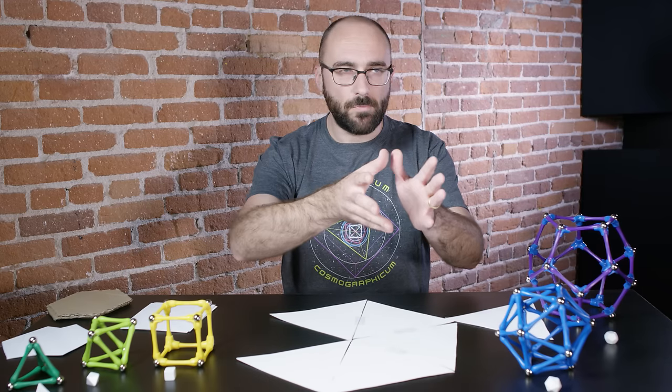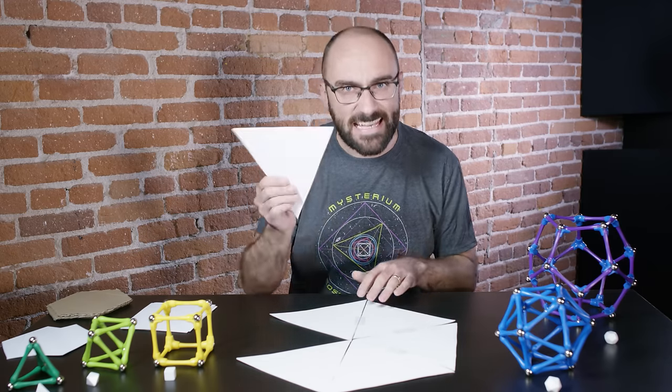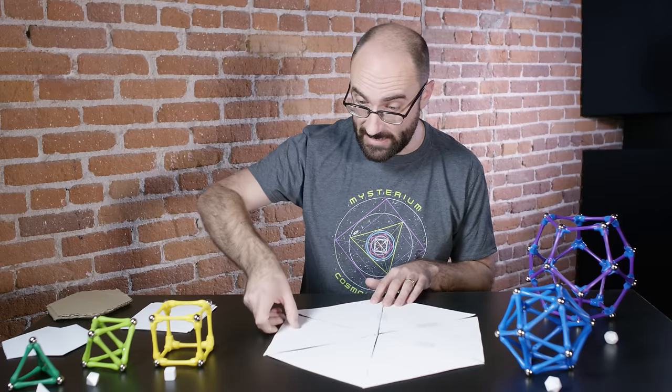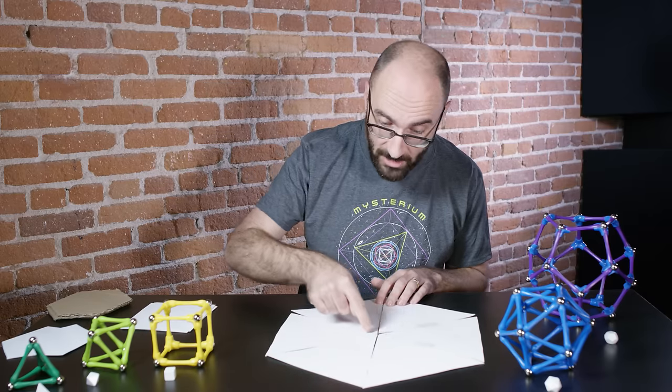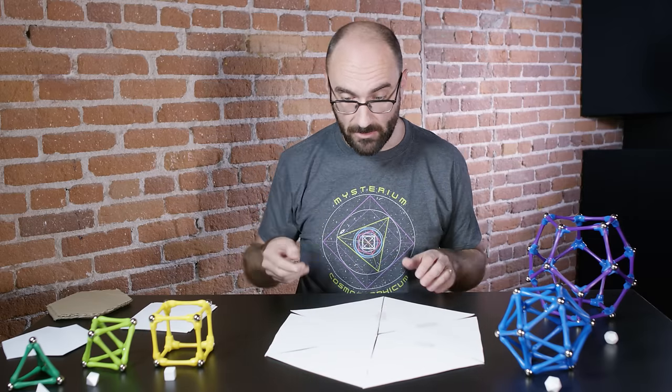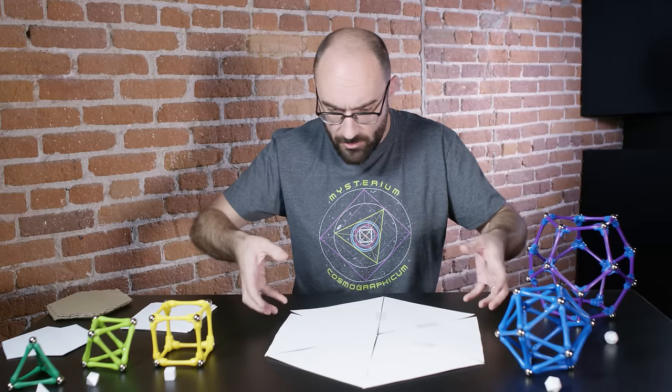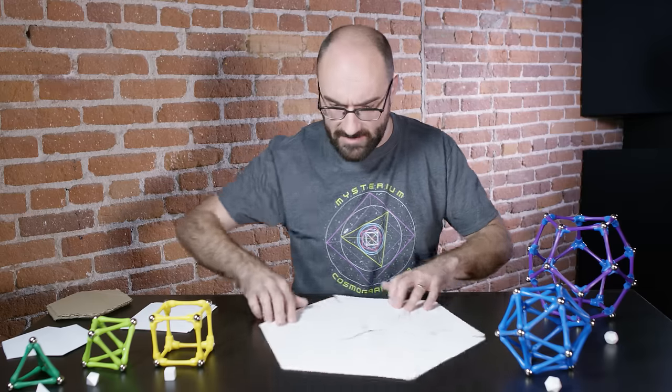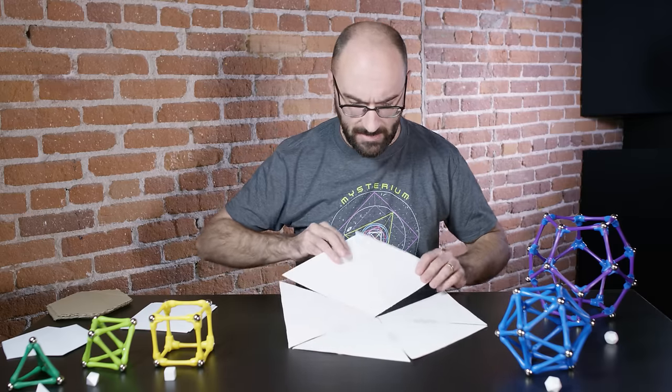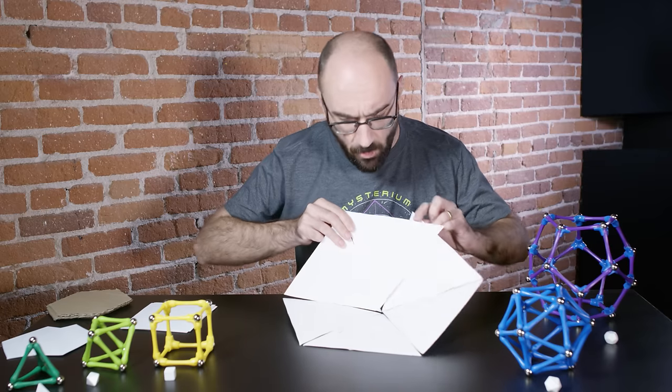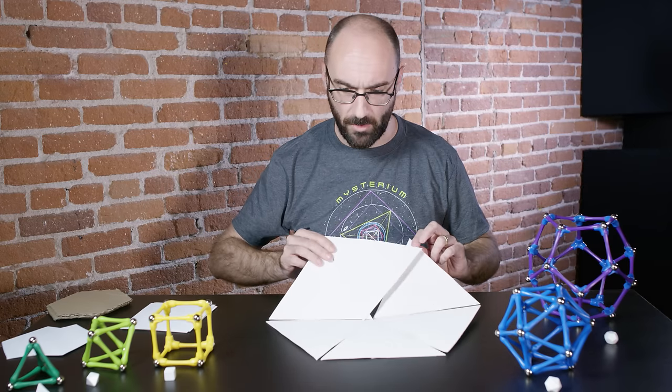We can't go any further. If I take a sixth equilateral triangle and put it in, I now have a full 360 degrees occupied here in the middle. There are no gaps left for this shape to fold up on itself without there being some overlap. Nope, not good. We can't move forward.